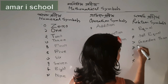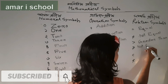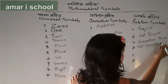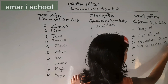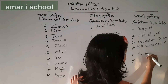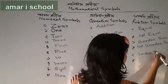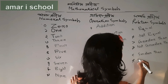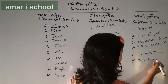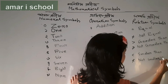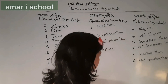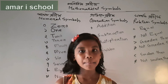Now the relation symbols: 'greater than', 'not greater than' — called 'chotto na' (not greater), 'smaller than', and 'not smaller than'. Okay my friends, practice yourself. I will come back soon. With that, goodbye!